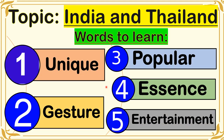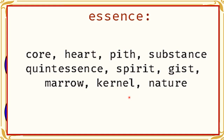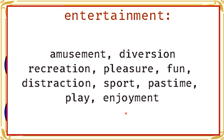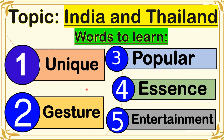The next word is 'essence,' which means core, heart, pit, substance, spirit, gist, marrow, kernel, and nature. The last word is 'entertainment,' which means amusement, diversion, recreation, pleasure, fun, distraction, sport, pastime, play, and enjoyment. These are the five words that can help us better understand our topic for today: unique, gesture, popular, essence, and entertainment.